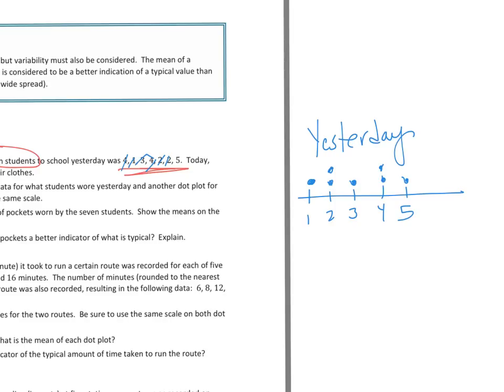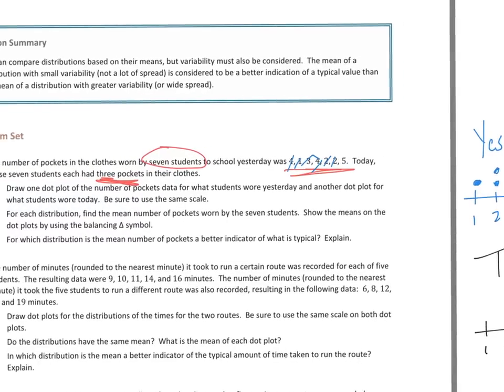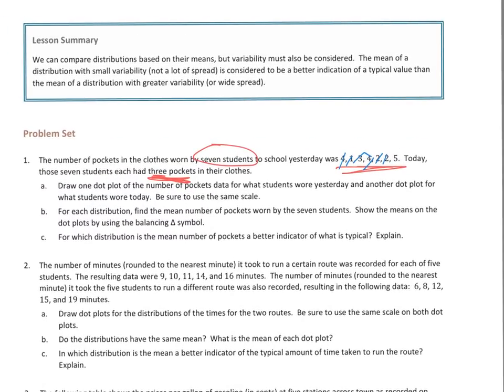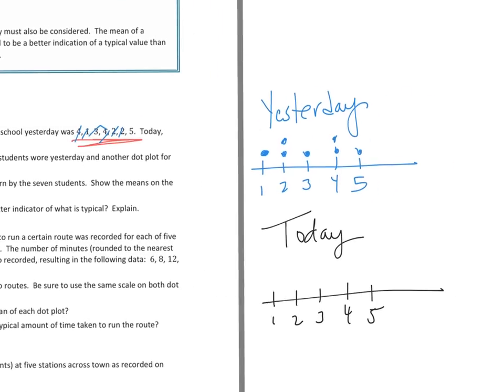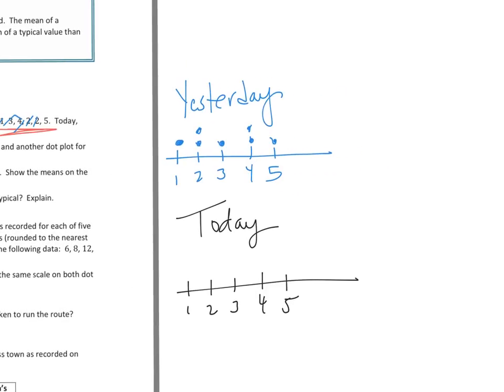Now, for today, I've got to use the same scale, so I've got to have 1, 2, 3, 4, 5, and I know that all 7 of them wore 3. And the reason why I know that is it says it right there. Those 7 students each had 3 pockets. So I'm going to go back over here, so I've got to put 7 dots over 3. 5, 6, 7. So I'm darkening those in, there's 7.